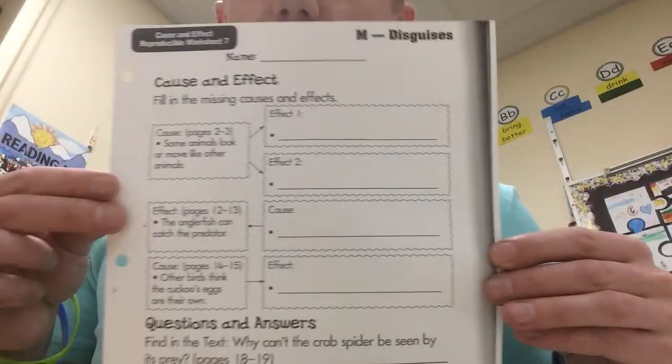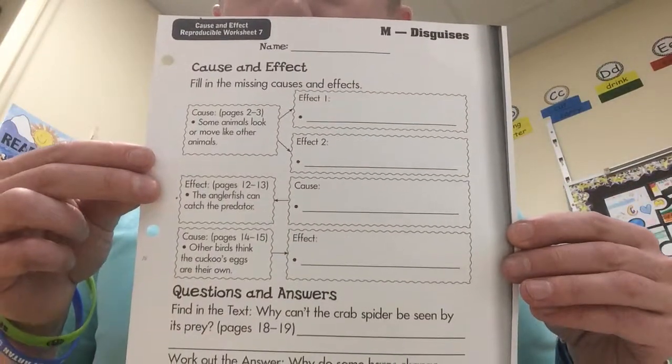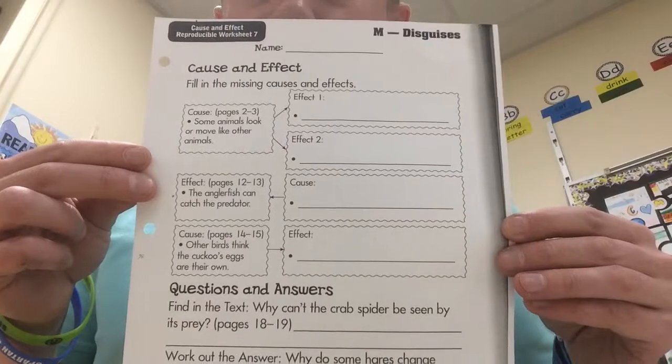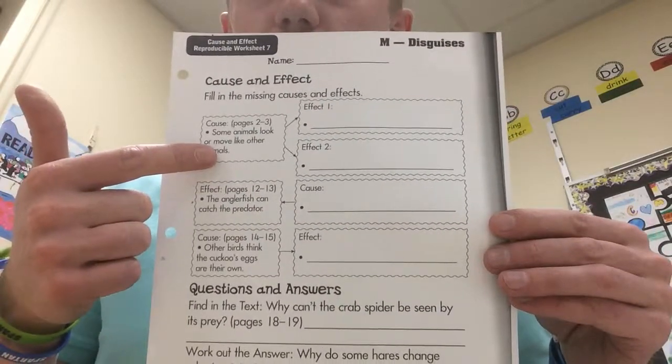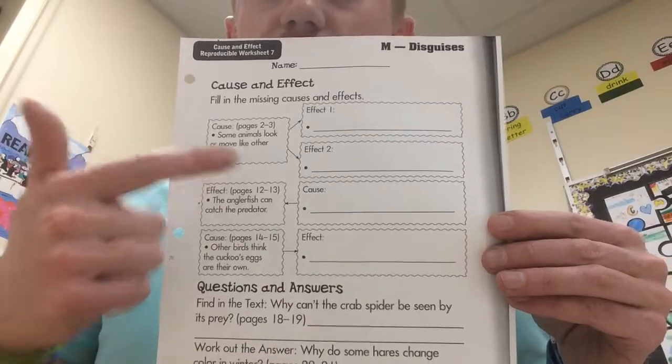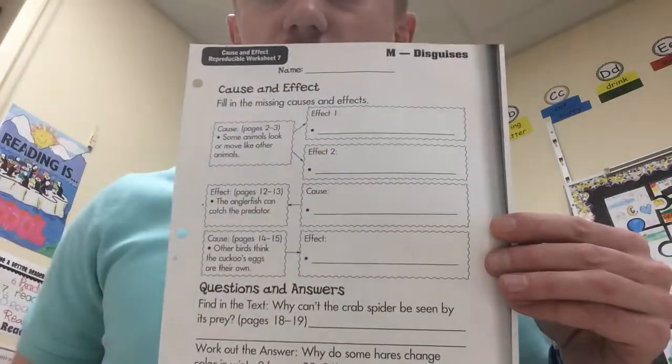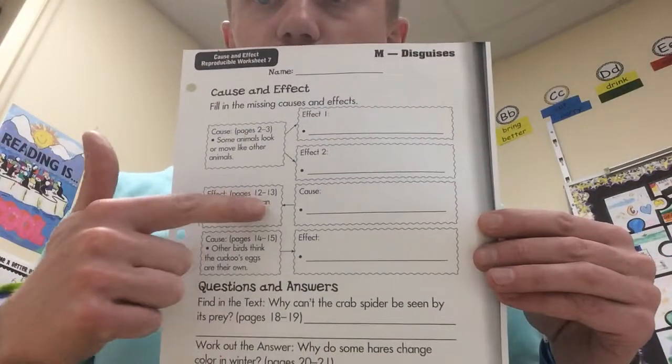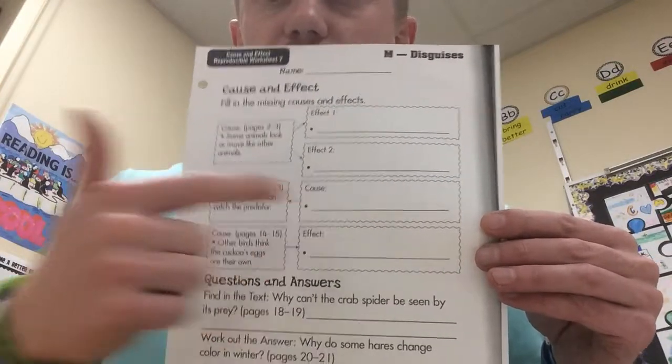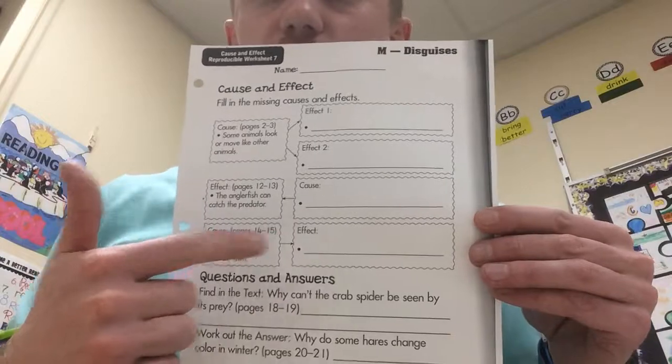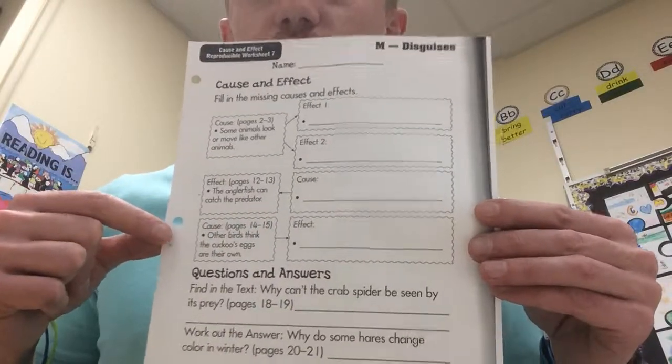Today you guys are working on Worksheet 7, and it looks like this. Up on top, you need to fill in the missing causes and the missing effects. Up here, we can see that this cause has two different effects. You need to fill those in. Over here we have one of the effects - you need to tell us the cause. And here we have the cause - you need to write down the effect for that.